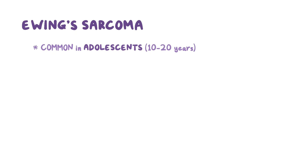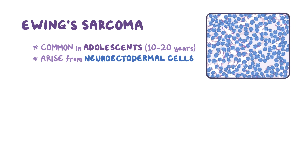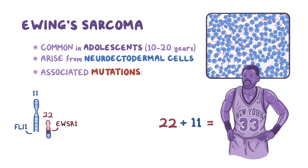Another type of malignant bone tumor is Ewing sarcoma, which is also common in adolescents, typically between the ages of 10 to 20 years. Ewing sarcoma is thought to arise from neuroectodermal cells, which look like small, round, blue cells on microscopy. Ewing sarcoma is associated with a chromosomal translocation between the EWSR1 gene on chromosome 22 and the FLI1 gene on chromosome 11. You can remember this by 22 plus 11 equals 33, the jersey number of former basketball player Patrick Ewing.